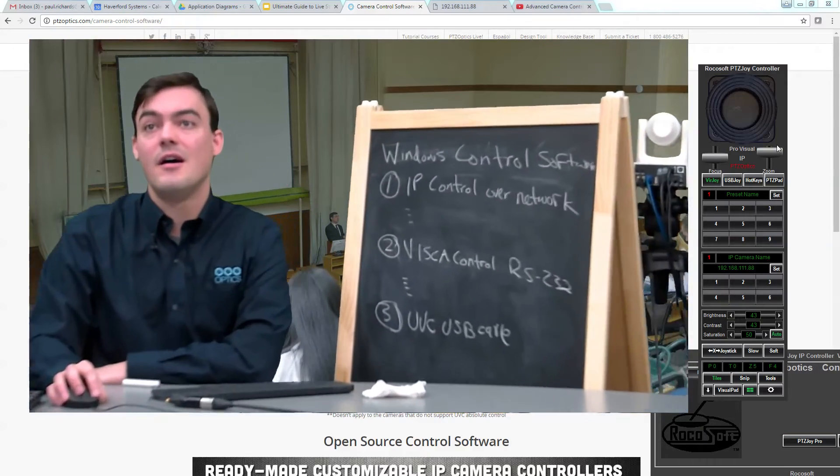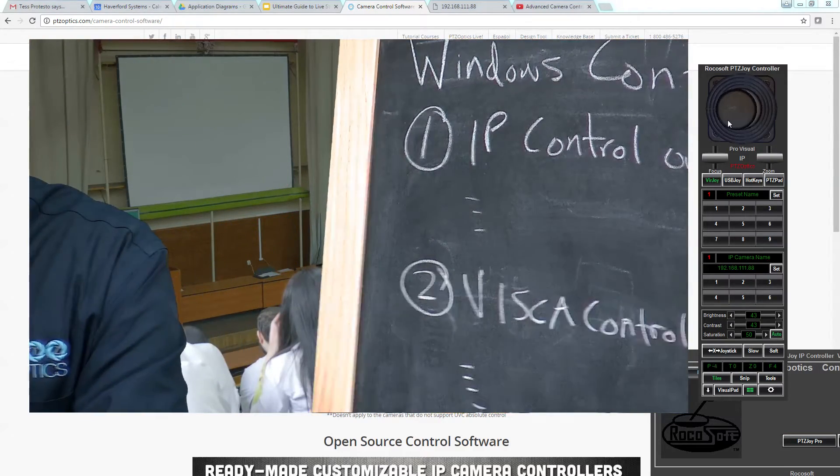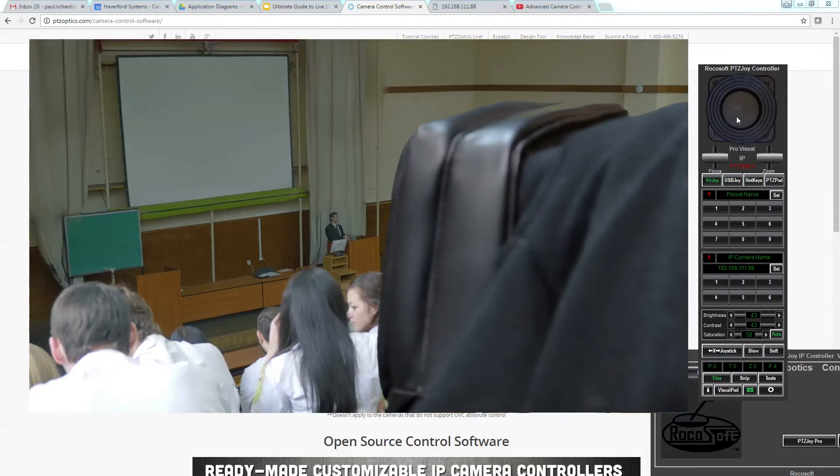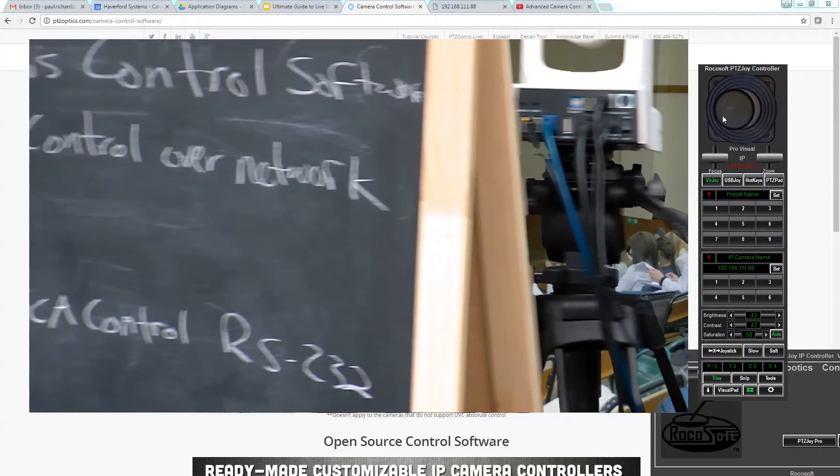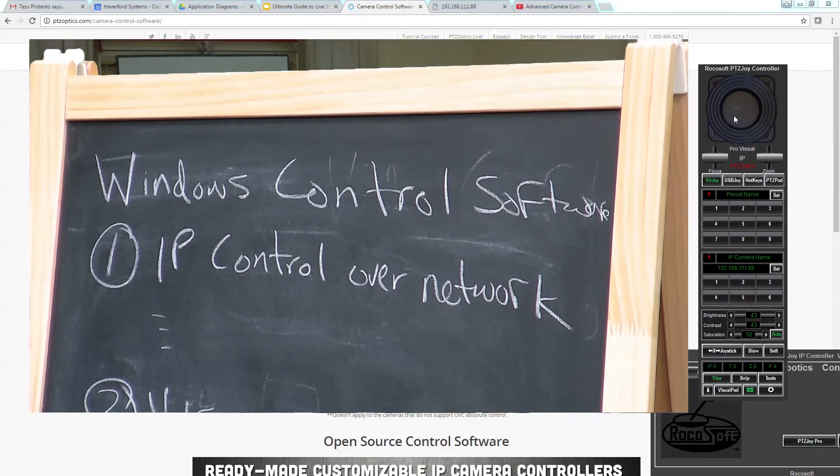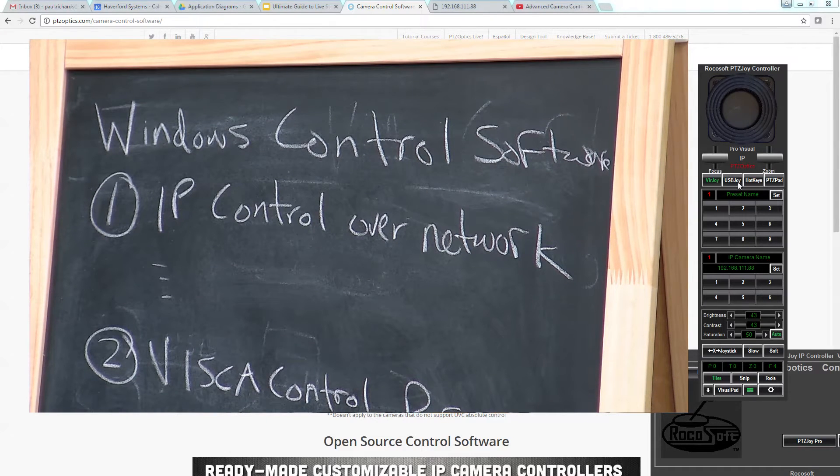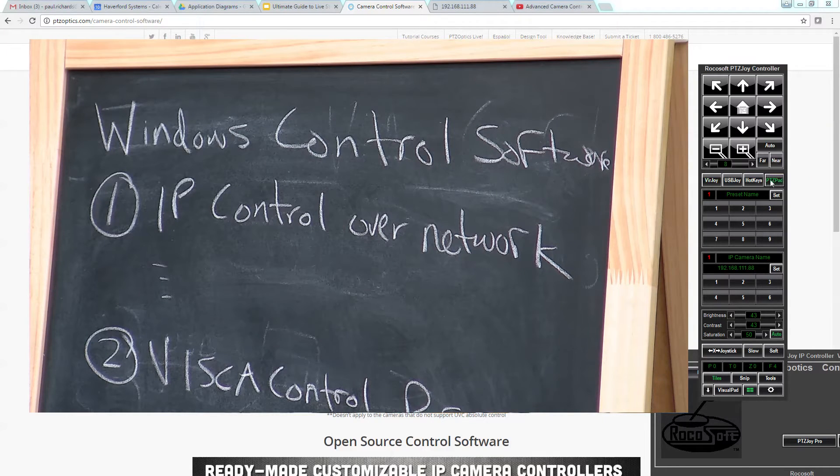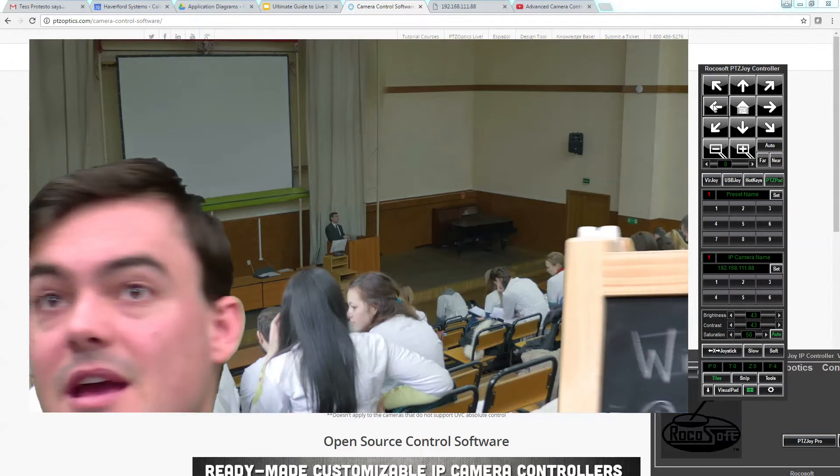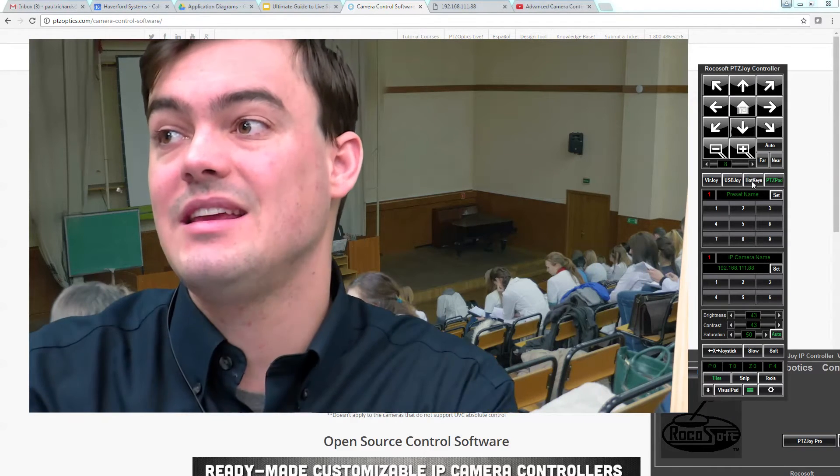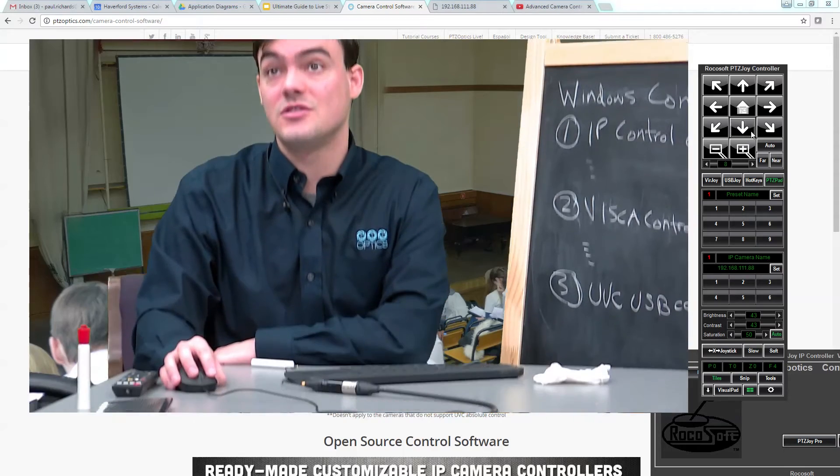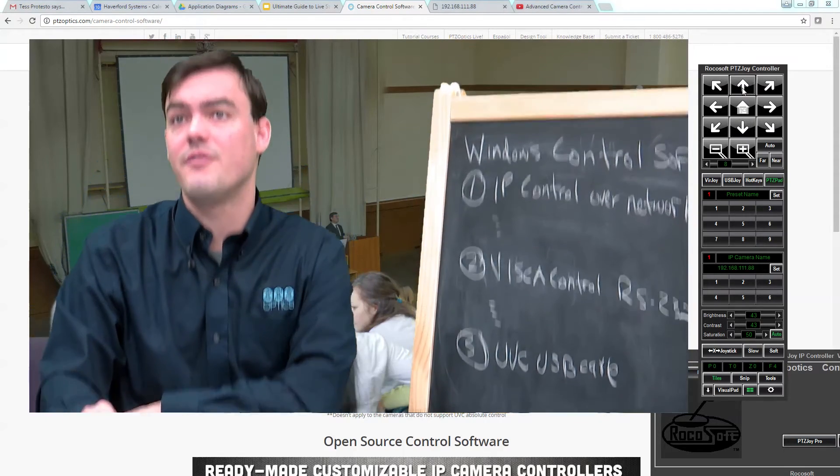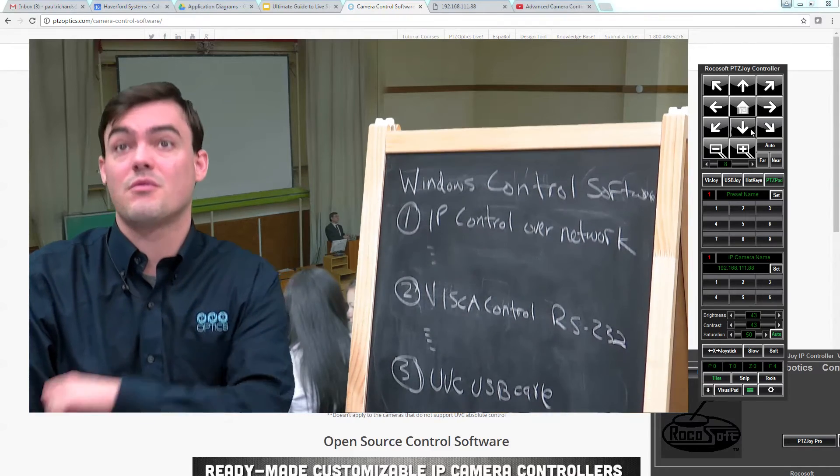You can also plug in a USB joystick so like a gaming joystick or any USB joystick and we can use a USB joystick. We can also do a PTZ pad which I like a little easier than the joy maybe via a mouse and then these hotkeys actually turn your keyboard into a control surface. So there's so much you can do with this software and there's obviously three different ways you can control it via IP, VISCA, or UVC.